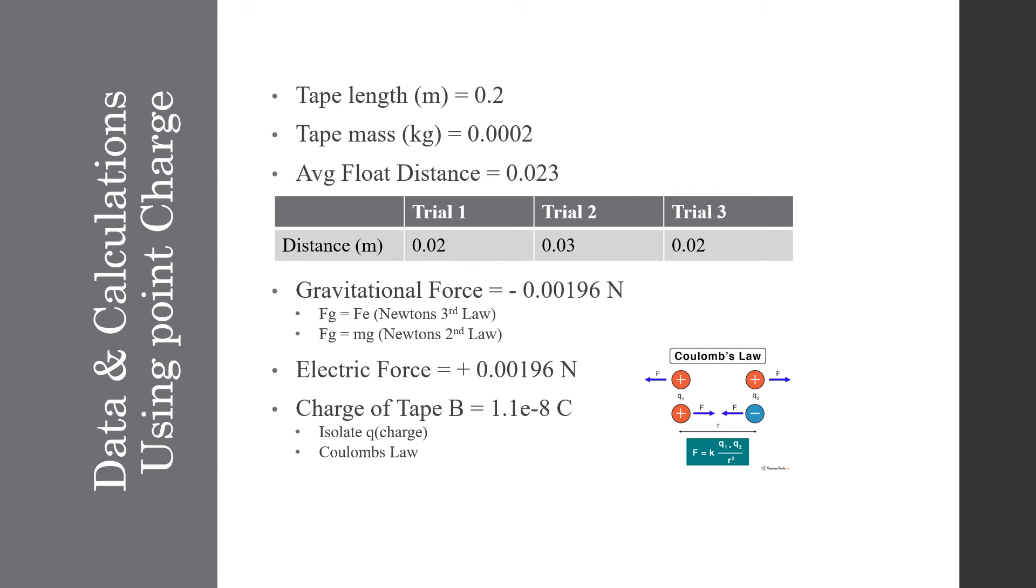And our previous charge of tape B, which we calculated in the last lab for the singular point charge, was 1.1 e to the negative 8 coulombs, which we found using Coulomb's law and isolating the q charge. And now we are going to try to find a more accurate charge for tape B using the GlowScript model.